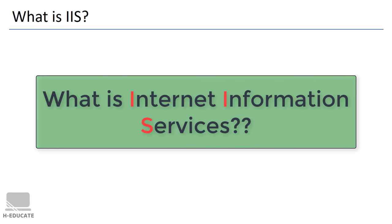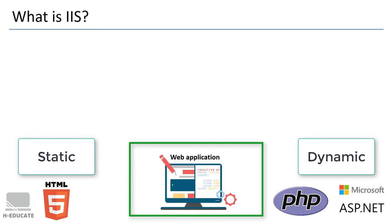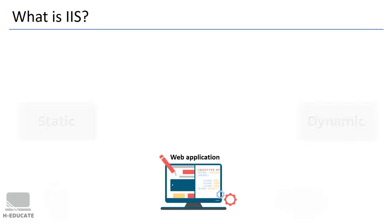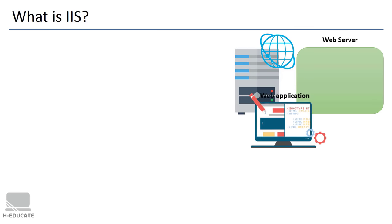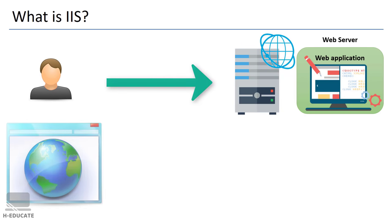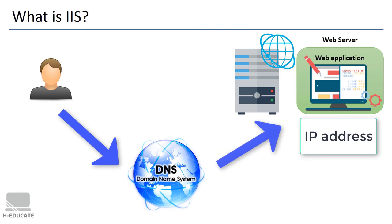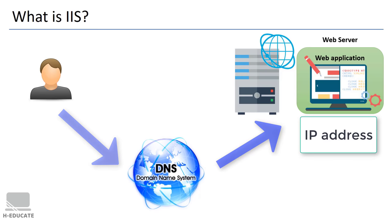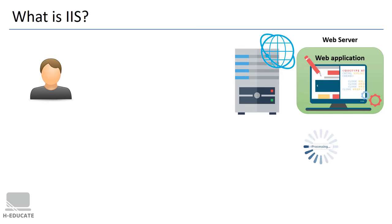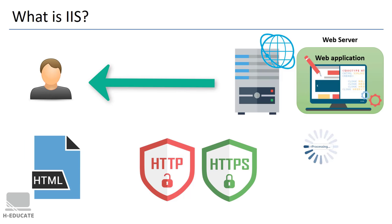Let's make things simple by looking at this example. Say we have a web application or website — it can be static or dynamic like ASP.NET or PHP — and we need to make it available on the internet. To bring the website online we have to host it in a web server. Whenever a user requests the website, the request is resolved by worldwide DNS servers to get the server IP address, and then it routes the request to the target web server, which processes it and replies with HTML pages using HTTP or HTTPS.